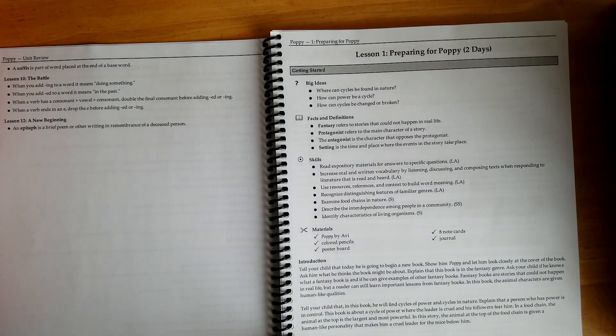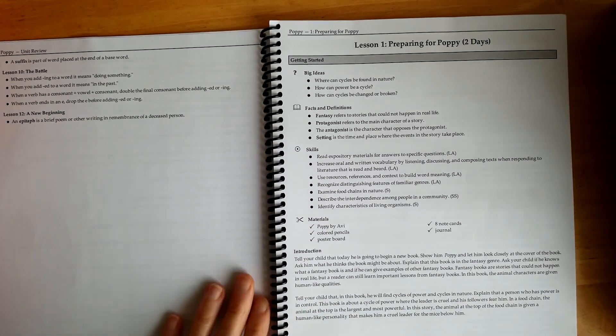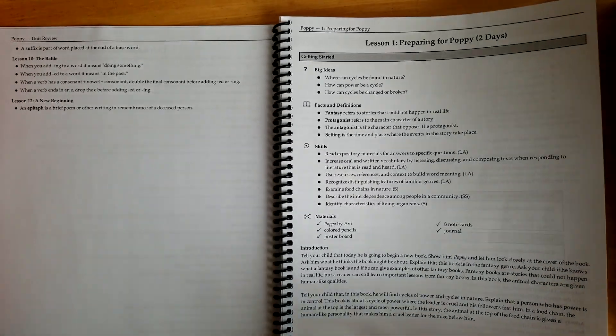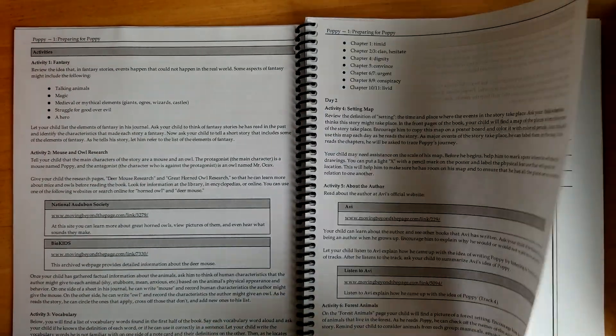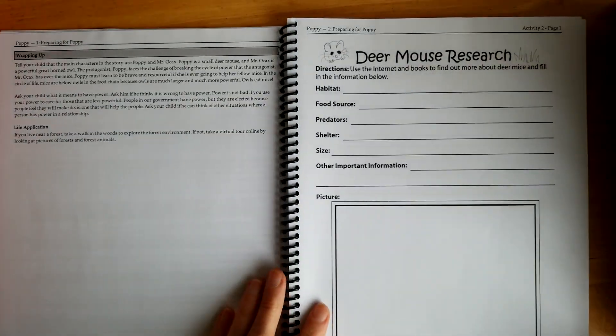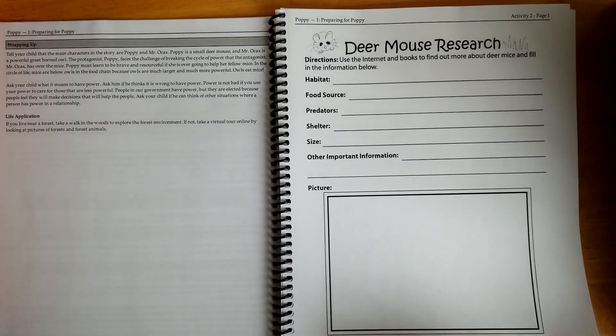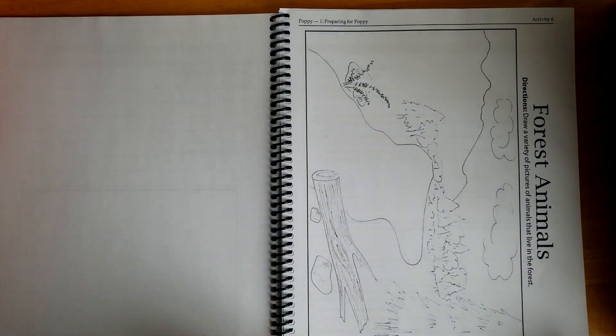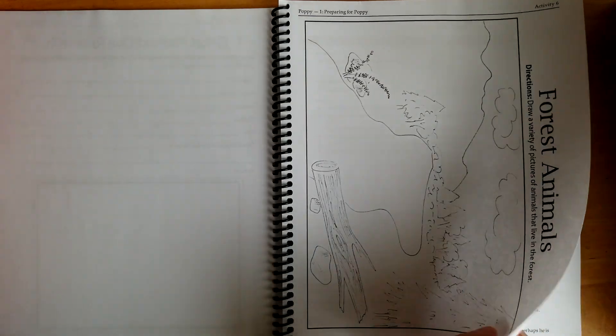So preparing for Poppy, this is two days. This is lesson one, and from here I'm just going to flip through it so you can see what is included. This was fun - mouse research, great horned owl research, forest animals. She got to draw a picture of forest animals here.